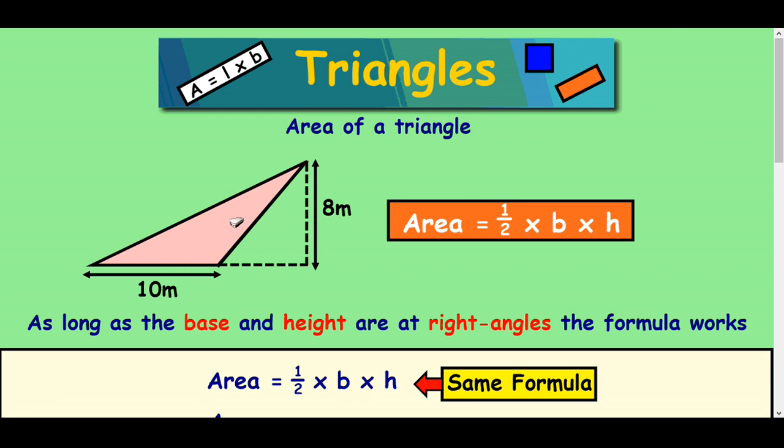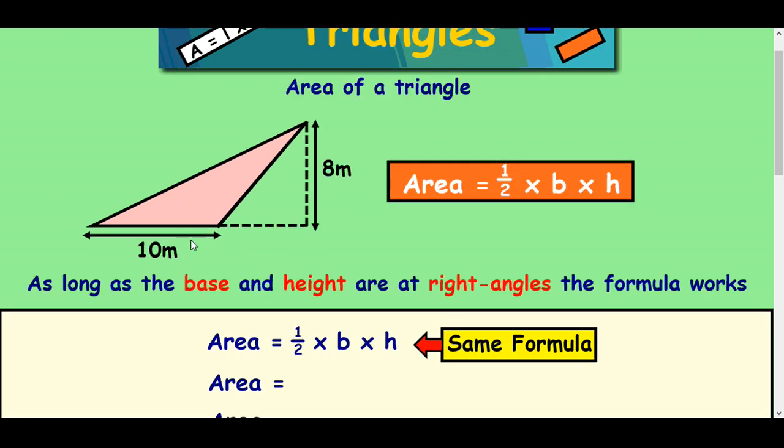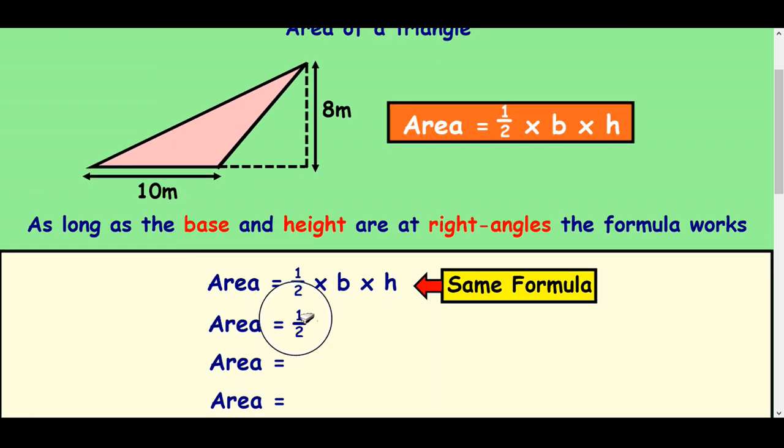And also this type of triangle where you've got the base of 10 and a height of 8. Now notice the height's at right angles to the base here, it's not this diagonal line. And if you wanted to work out the area of this triangle you just do the same thing: half times 10 times 8, you can see that's going to be 40, 5 times 8, 40 meters squared. But why is that working?